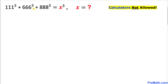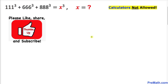Welcome to pre-math. In this video tutorial we have got this equation: 111 power 3 plus 666 power 3 plus 888 power 3 equals x power 3, and now we are going to find the value of x. Just keep in mind that we are not supposed to be using calculators of any kind. Please don't forget to give thumbs up to this video.